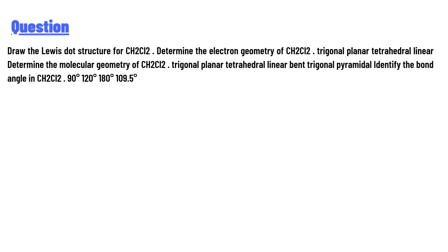Draw the Lewis dot structure for CH2Cl2. Determine the electron geometry of CH2Cl2: trigonal planar, tetrahedral, or linear. Determine the molecular geometry of CH2Cl2: trigonal planar, tetrahedral, linear, bent, or trigonal pyramidal. Identify the bond angle in CH2Cl2.